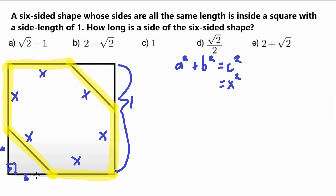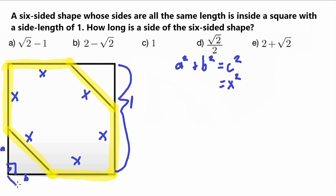This side length is one because one is the whole value of the square, minus this part which belongs to our six-sided shape and has a value of X. So this side length has a value of 1 minus X. The exact same thing applies to the other leg, because it is the same length. So a squared and b squared are both replaced by (1 minus x) squared.